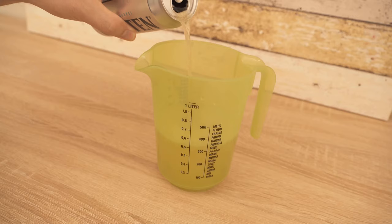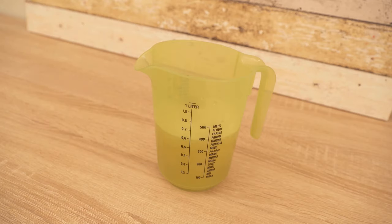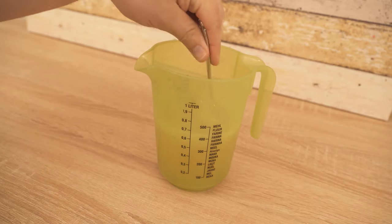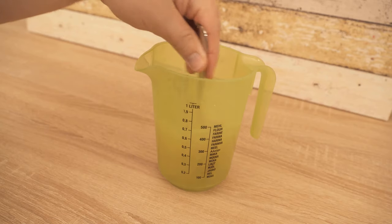Then mix this with water in a mixing ratio of 2 to 1. That is two parts water and one part beer. I took 400ml of water and 200ml of beer and stir the whole thing now, because it is also important that the carbon dioxide is already out.